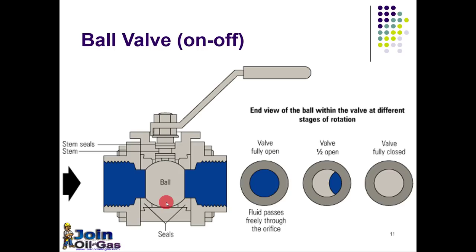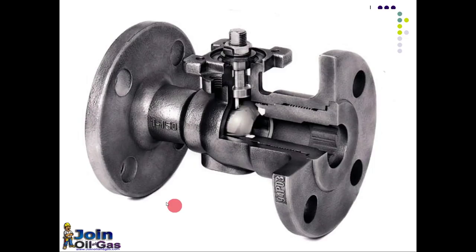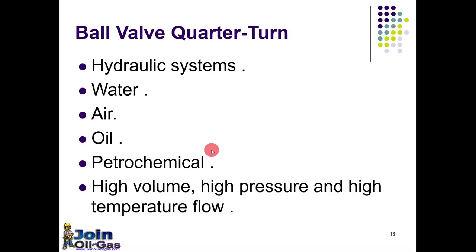Another type of valve is the ball valve, also used for on-off services. The difference between the plug valve and the ball valve is only the shape of the controlling element, which is a ball — that's why it's called a ball valve. The operation and functions are the same as the plug valve. Here you can see the cut-away view; when we operate the valve from the handle, this ball turns it on or off. Ball valve is used mostly on hydraulic systems, water, air, oil in the petrochemical industry, and it is used for high volume, high pressure, and high temperature flow.